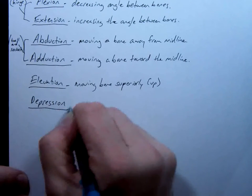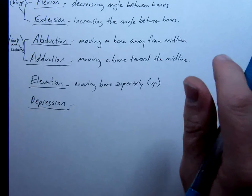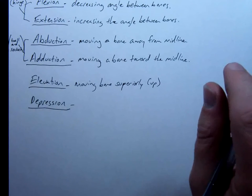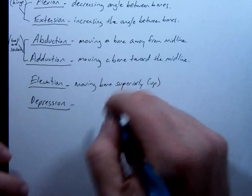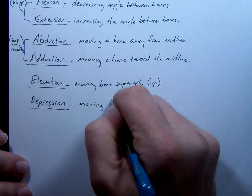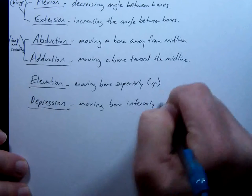That's why that little giant popsicle stick, they stick on your tongue if you're at the doctor's office. They don't do it as much anymore. It's called a tongue depressor because it's pushing down. Depression. Moving bone inferiorly. Down.